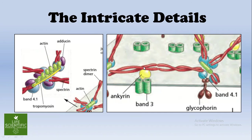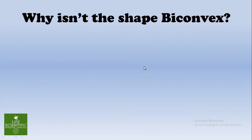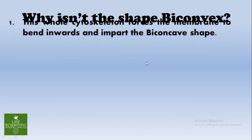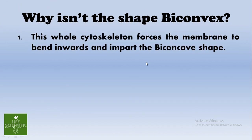A question may arise: why isn't the shape biconvex? The whole cytoskeleton forces the membrane to bend inwards and imparts the biconcave shape. As we discussed, the whole cytoskeleton is actually pulling the cell membrane inwards.